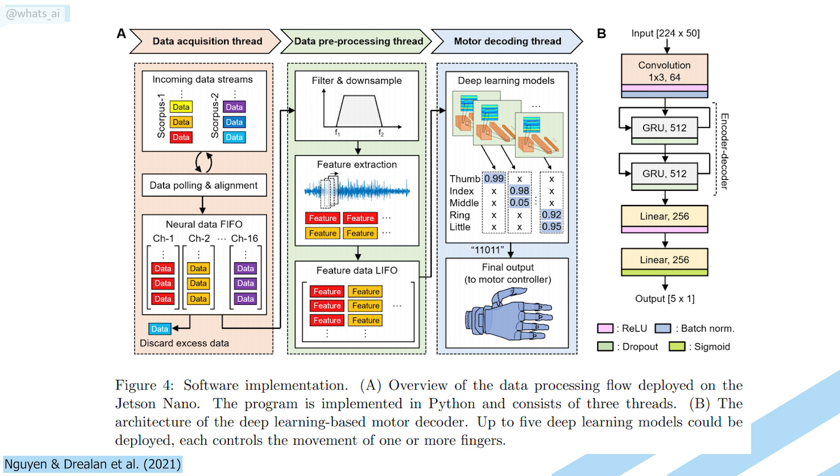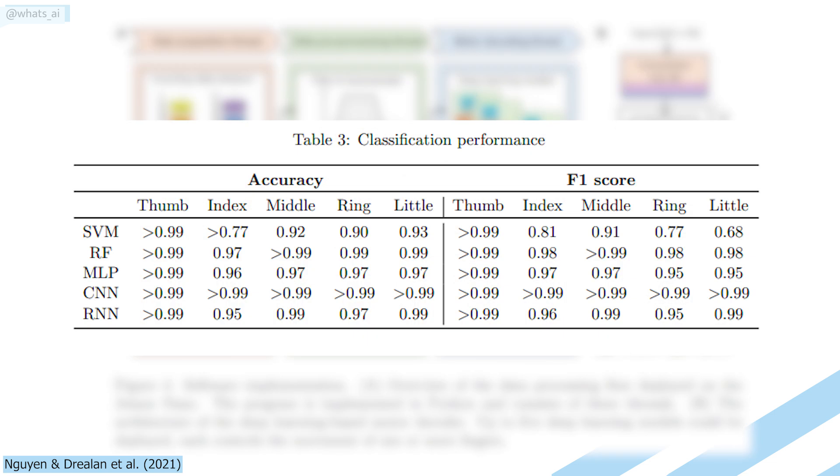They studied many different architectures, as you can read in their paper, but this is the most computationally effective model they could make, yielding incredible accuracy of over 95% for the movement of the fingers.